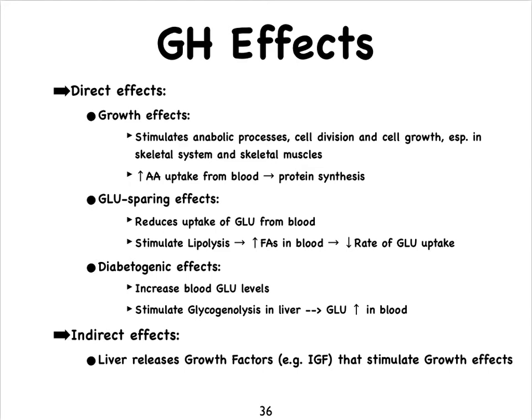The glucose-sparing effect means that growth hormone leaves glucose already in the blood alone — it prevents cells from using that glucose. Instead, it stimulates lipolysis, literally the splitting of lipids, so cells use fatty acids from the blood rather than glucose, decreasing the rate of glucose uptake.